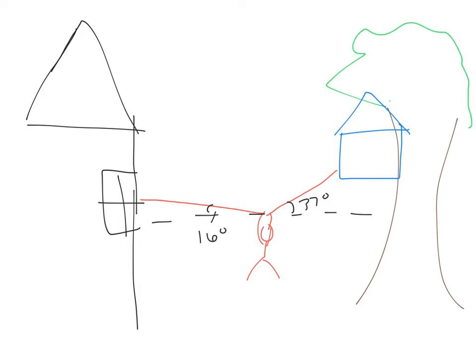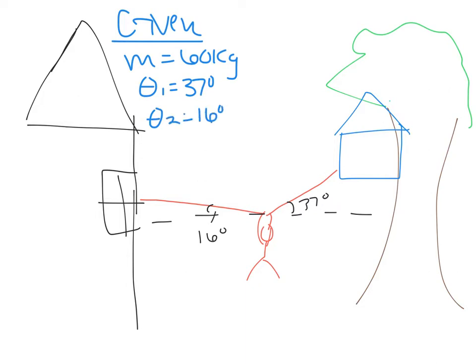Now listing what I know. Given, I only have three things. First, the mass is 60 kilograms. Second, theta 1 is 37 degrees, and theta 2 is 16 degrees. This should be 38, sorry, this should be 38. It doesn't matter what I make theta 1 or theta 2, as long as you stay consistent when dealing with each of the two tension forces.